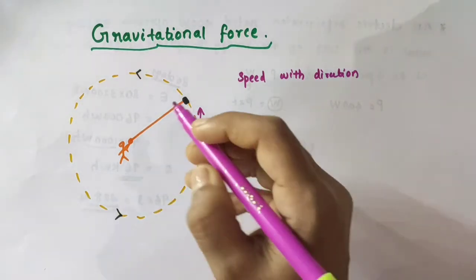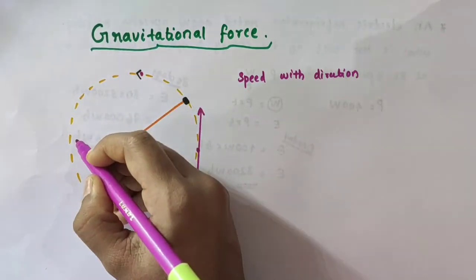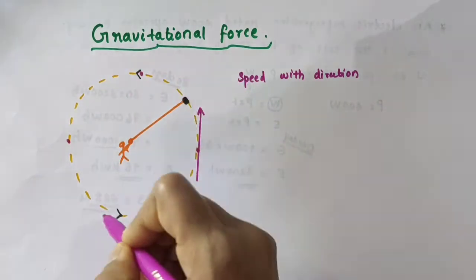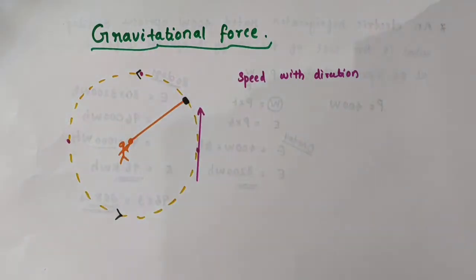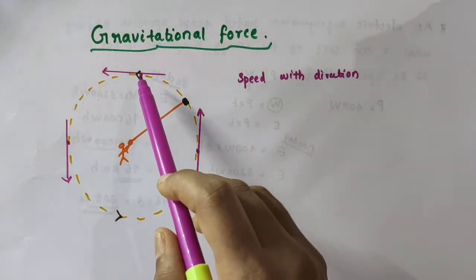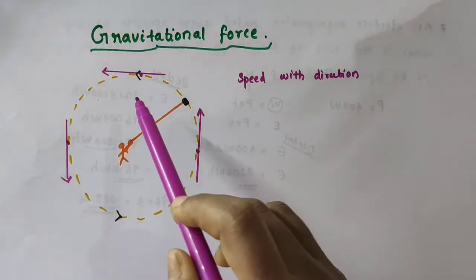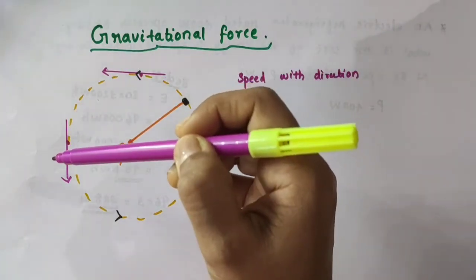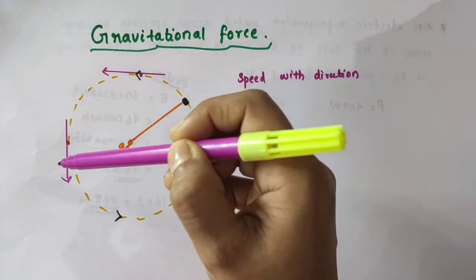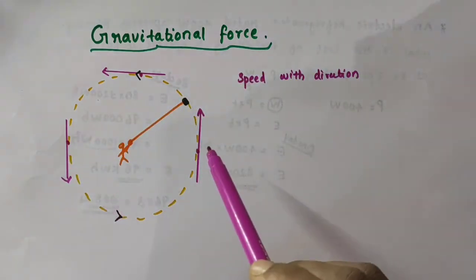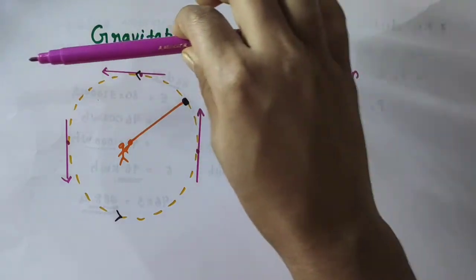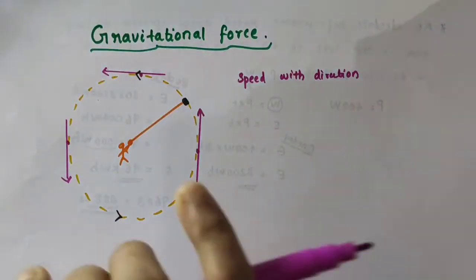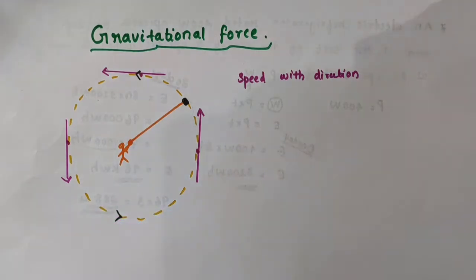What about the direction of motion of the stone at other points? To get that, we draw a tangent through that point and mark the arrow corresponding to the anti-clockwise motion. When the stone reaches one point, its direction of motion is like this; when it reaches another point, its direction of motion is towards the left; and when it reaches yet another point, its direction is towards the right.